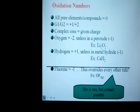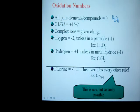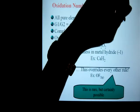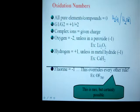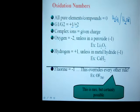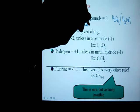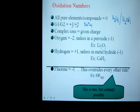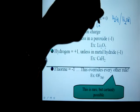Basic rules: all pure elements and compounds equal zero. So for instance, pure hydrogen gas would have a charge of zero, as would pure water — overall it has a charge of zero. Group one and group two are given charges; those are going to be metals.